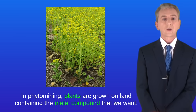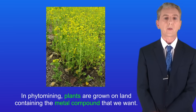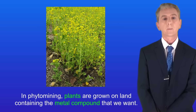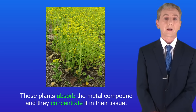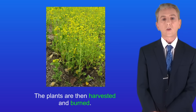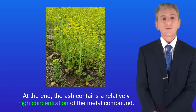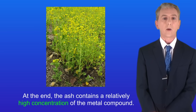The first method is called phytomining. In phytomining, plants are grown on land containing the metal compound that we want. These plants absorb the metal compound and they concentrate it in their tissue. The plants are then harvested and burned. At the end, the ash contains a relatively high concentration of the metal compound.